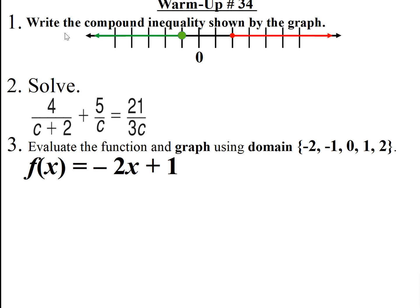Warm-up number 34 is on your screen. Number 1 reads: write the compound inequality shown by the graph. We have a graph in green on the number line going from negative 1 with a solid point going to the left with an arrow. Another graph going in red from positive 2, solid point going to the right. Number 2: solve 4 over C plus 2, plus 5 over C, equals 21 over 3C. Number 3: evaluate the function and graph using the domain negative 2, negative 1, 0, 1, and 2, given f of x equals negative 2x plus 1. Go ahead and copy that, get started. If you finish early, get a Cornell note ready — today's going to go super fast.